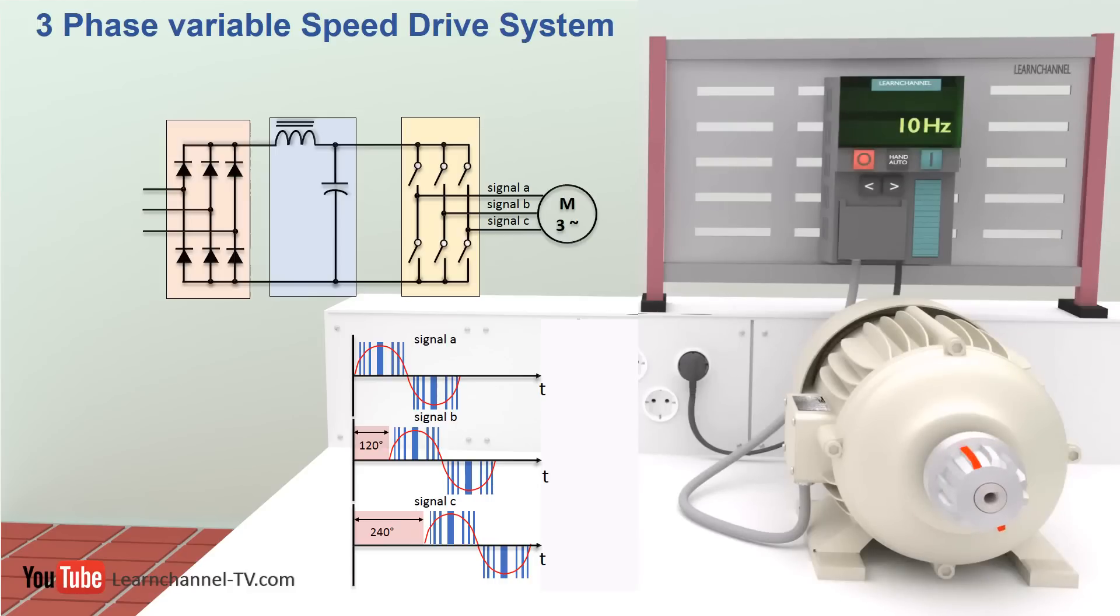To ensure the efficient operation of the motor, the sine waves produced by each pair of inverter switches are 120 degrees out of phase.